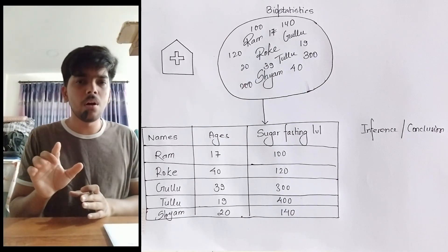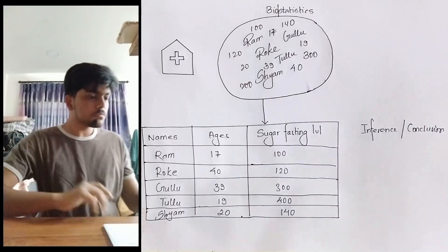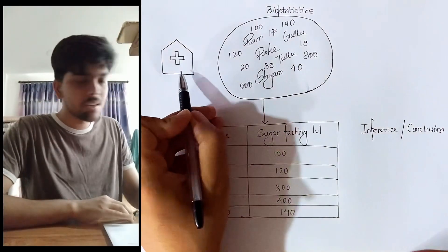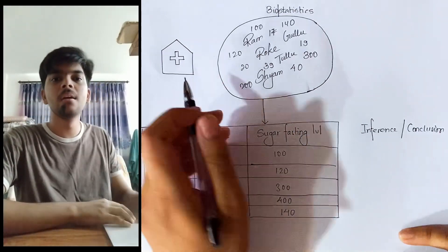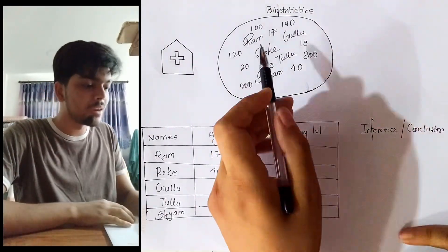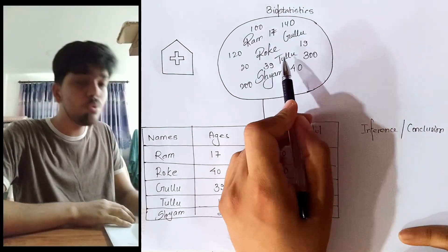Let me show you a very good example. Let's suppose this right here is a health post. This health post has been visited by five people: Ram, Roke, Gullu, Tullu, and Sam.